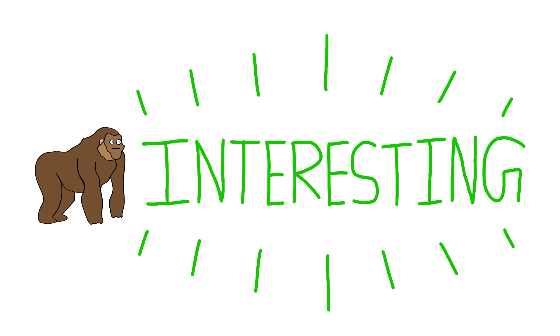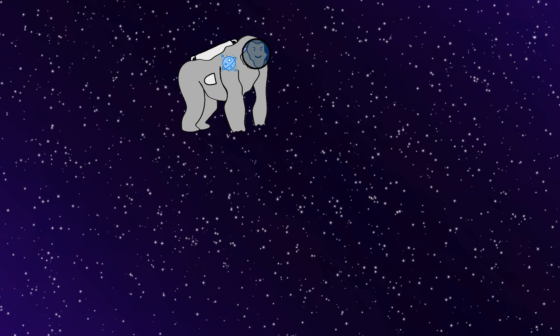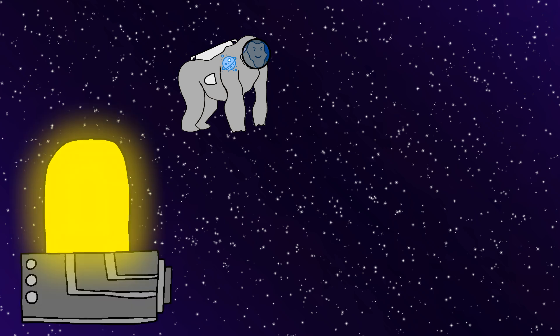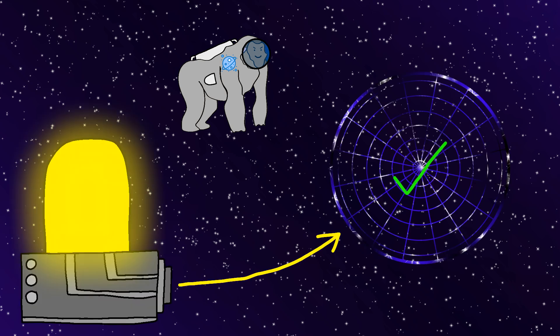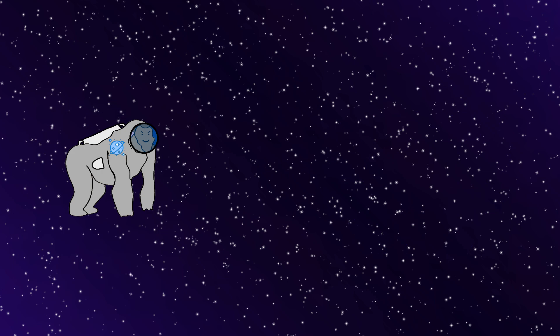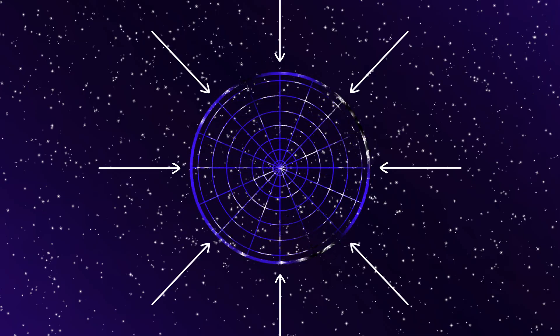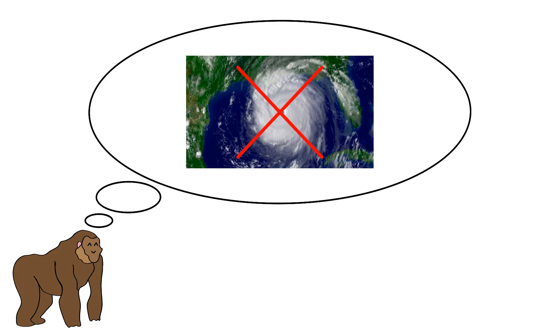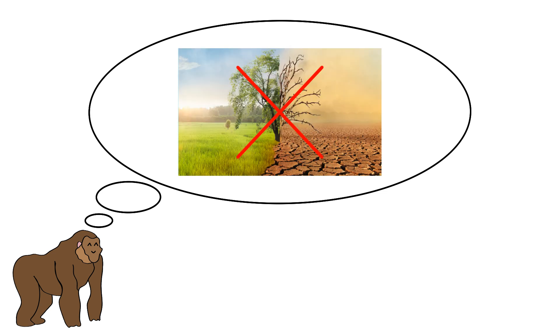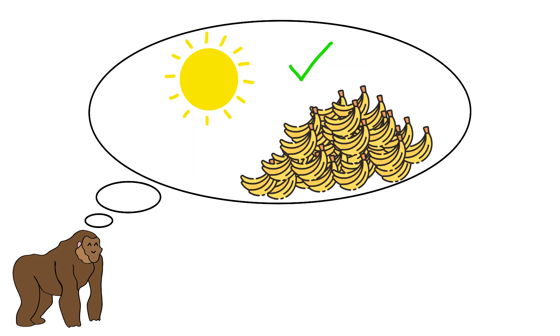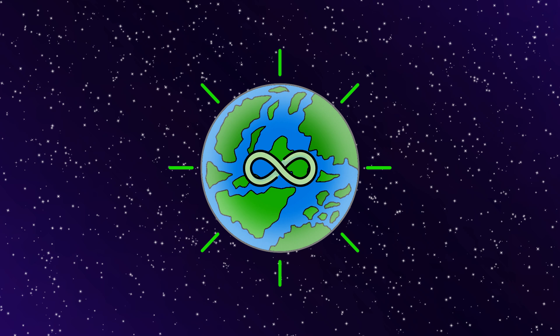But here's where things get interesting. Monkey decides to use all this energy to create the perfect environment inside the sphere. So Monkey installs massive climate control systems that can regulate temperature and weather across the entire inner surface. And Monkey's thinking, finally, no more hurricanes, no more droughts, no more climate change, just perfect banana-growing weather, everywhere, forever.